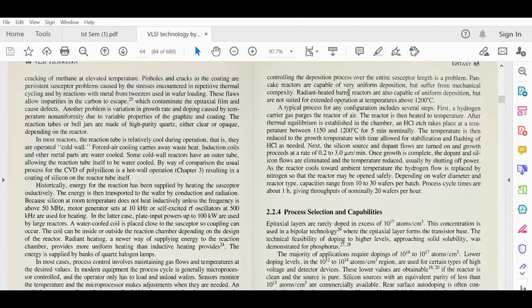Though the capacity is high and throughput is high, deposition process control is problematic. Pancake reactors are capable of very uniform deposition but suffer from mechanical complexity. Radiant heated barrel reactors are also capable of uniform deposition but are not suited for extended operations at temperatures above 1200 degrees centigrade. All the shapes have their advantages and disadvantages depending upon our application.